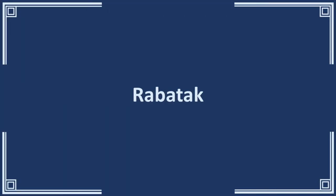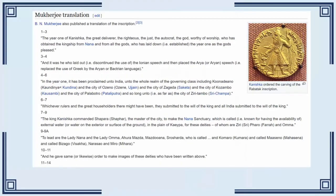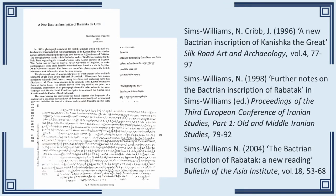In 1993, a photograph of the then newly discovered Rabatak inscription was delivered to the British Museum. The inscription was written in the Bactrian language, using a variant of Greek script, and had been found in Afghanistan. Based on the contents and what we know of the context, it comes from a royal sanctuary called a Bagalago — literally 'House of the Lords.' It was translated and published by Nicholas Simms-Williams in 1996, who has subsequently published two more revised versions. There are other translations — if you go to Wikipedia you will see one by B.N. Mukherjee, but don't touch it with a barge pole. The only reliable translations are those produced by Simms-Williams.